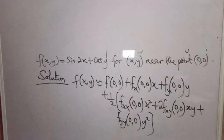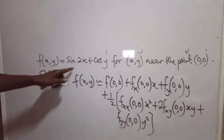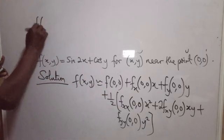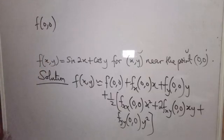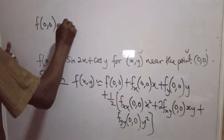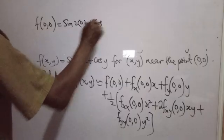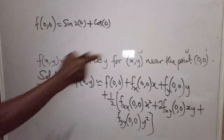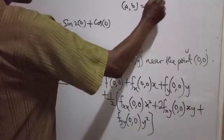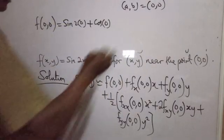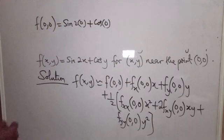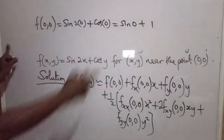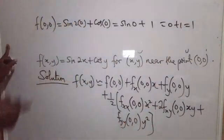The given function is f(x, y) = sin(2x) + cos(y). What is f(0, 0)? When x is 0 and y is 0, we have sin(2 × 0) + cos(0), which is sin(0) + cos(0) = 0 + 1 = 1. Our point a, b is (0, 0), so f(0, 0) = 1.